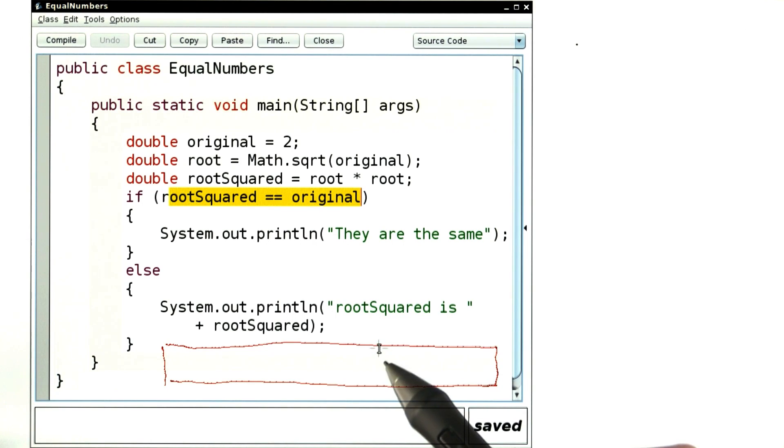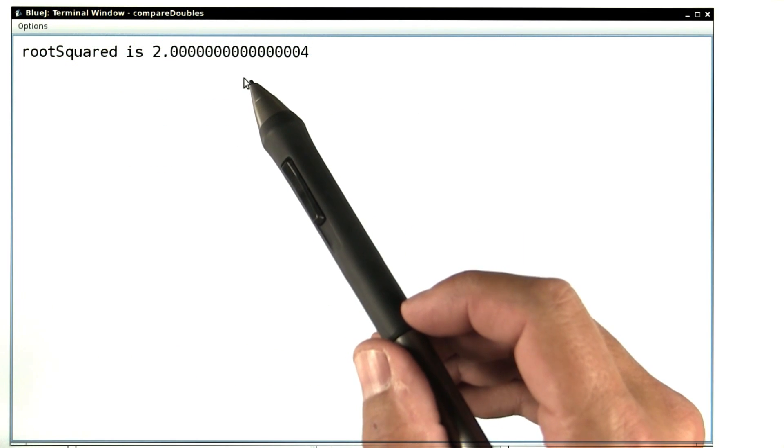When you run this program, you notice that you don't get the answer there the same, but you get that root squared is a value that's close to 2, but not quite. So there's a tiny error in that computation.